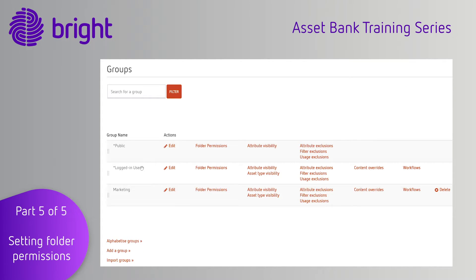You can be a member of multiple groups. For example, everyone who goes to your Asset Bank's URL is in the Public Group, and everyone who logs in is in the Logged In Users group. If you also add someone to your own group, like the marketing team shown here, they'll get those permissions too.